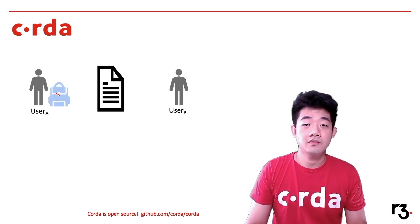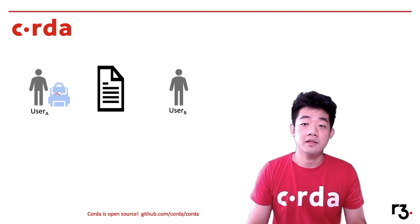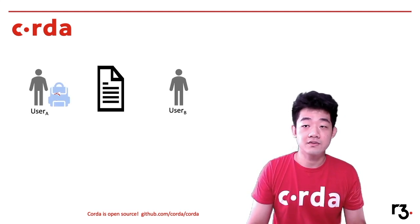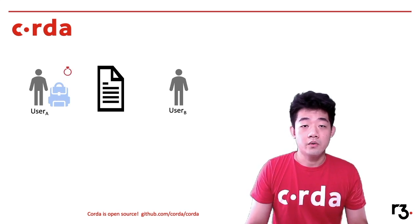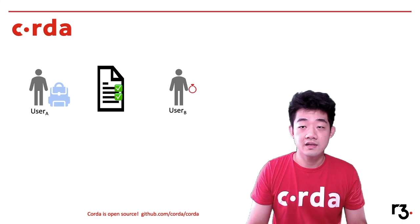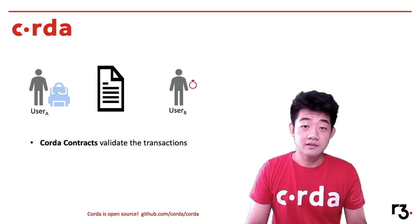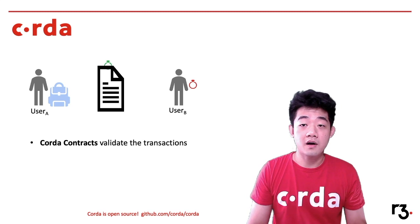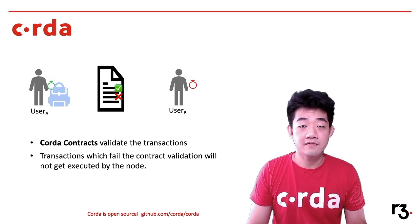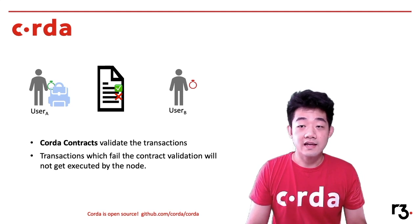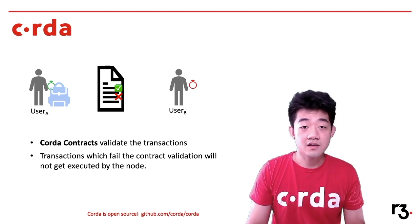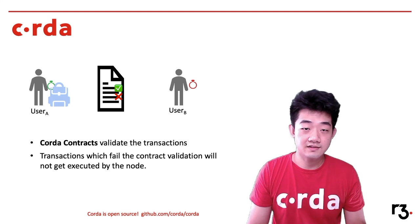Lastly, we will think about how we prevent people from creating bad transactions in the system. We will have rules to limit and verify each of the transactions, and they are called contracts in the QuoraState. In the contract, we define all the possible actions we want to do with a specific state and then write verification code for each of the intentions, and that will be the layer of protection against any potential malicious transactions.